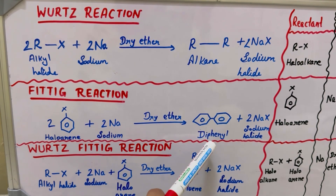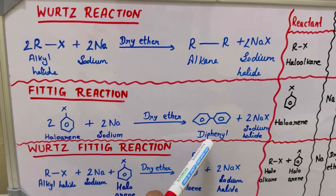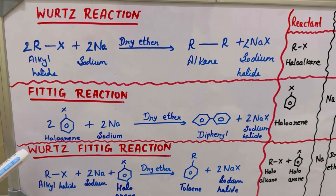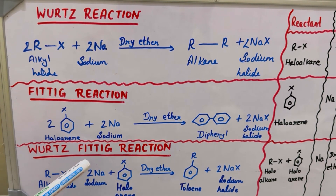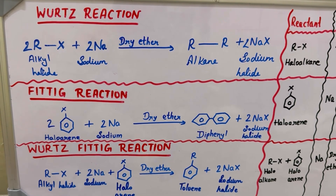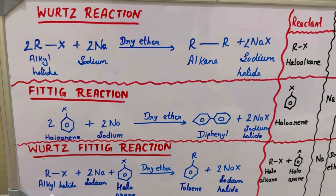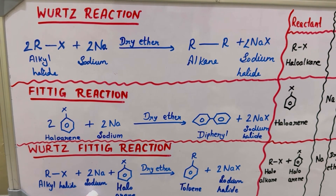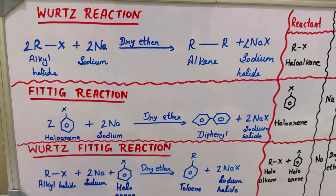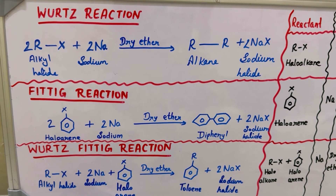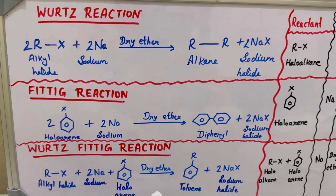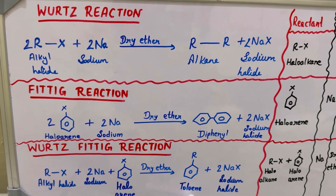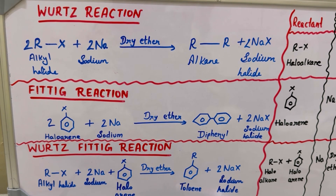Next is the Wurtz-Fittig reaction. In this reaction, one molecule of alkyl halide and two molecules of sodium and one molecule of haloarene in presence of dry ether form toluene and sodium halide.